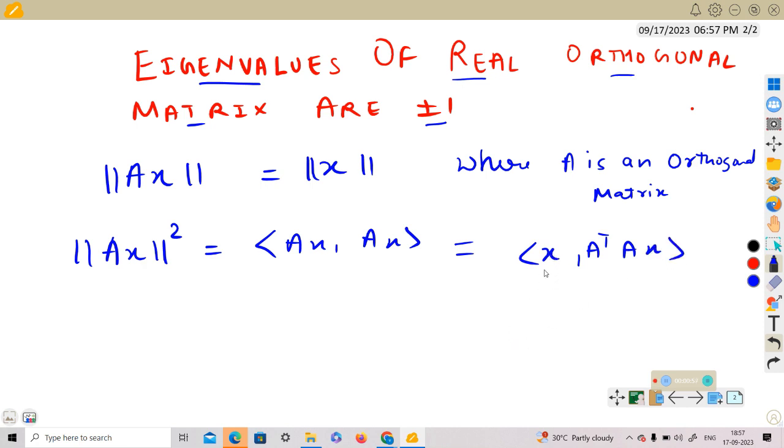This is a simple property. We can take the linear transformation from here to the other factor by transposing it. Now, from the definition of orthogonal matrix, A^T A is identity. So this is equal to <x, Ix>, which is equal to <x, x>. This is equal to ||x||².